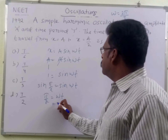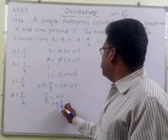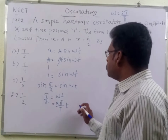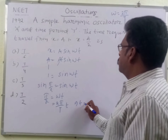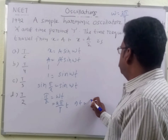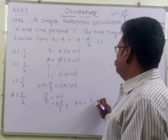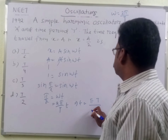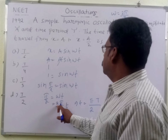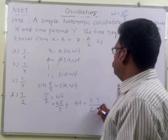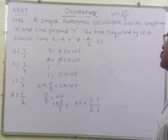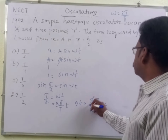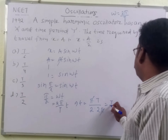We may write here: pi by 2 is equal to 2 pi by T multiplied by T. So what is T? T is equal to pi times T divided by 2 times 2. The pi cancels, giving T is equal to T by 4.